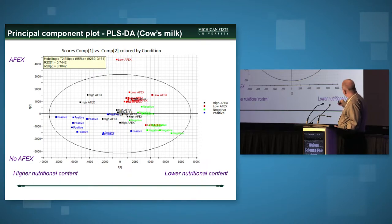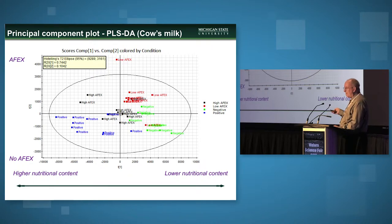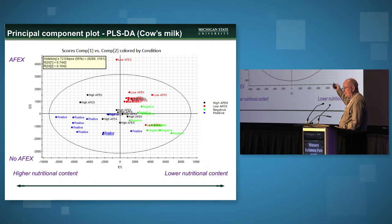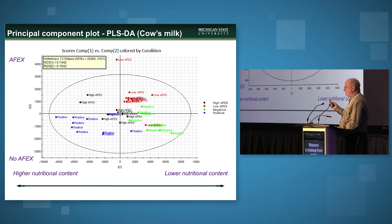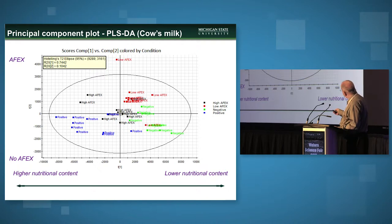The negatives in green are low nutritional content and low milk production. As you move from right to left, you increase milk production reflecting nutritional content. On the second principal component — the y-axis — the AFEX ammonia-treated diets are at the top, and the untreated positive and negative controls are at the bottom. So we see a two-dimensional separation that lets us identify which milk components are nutritionally related and which come from the ammonia-treated dietary component.